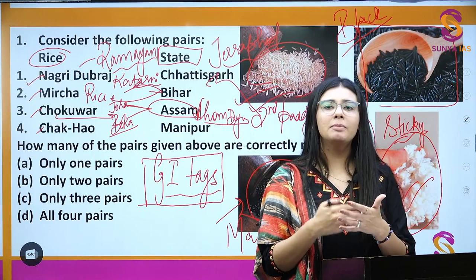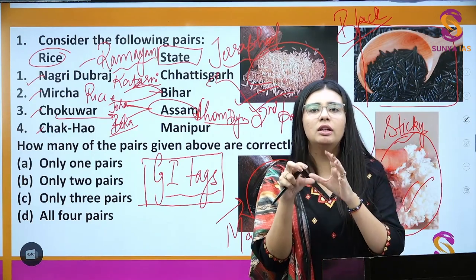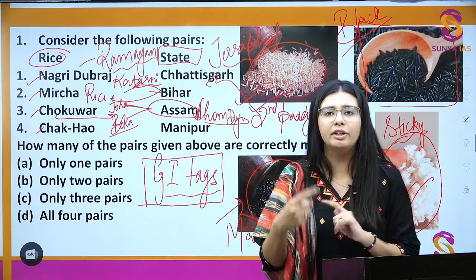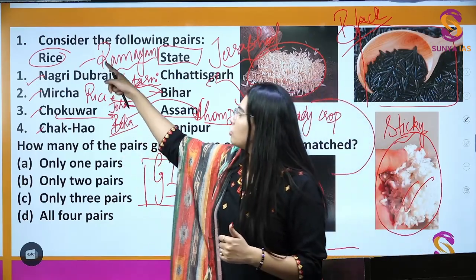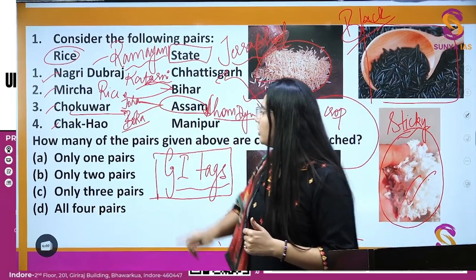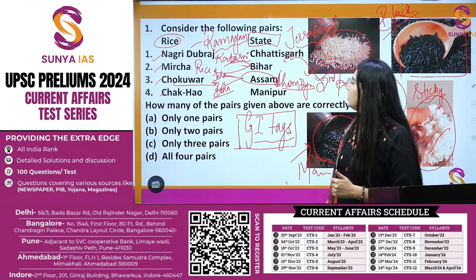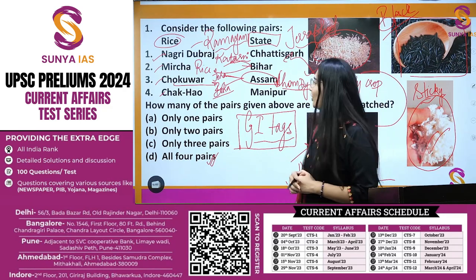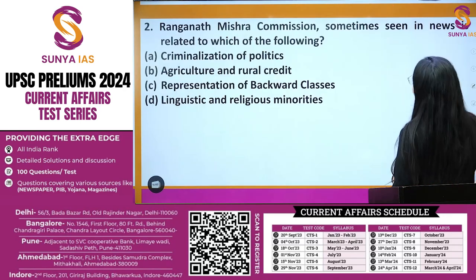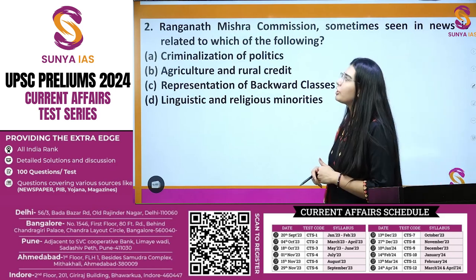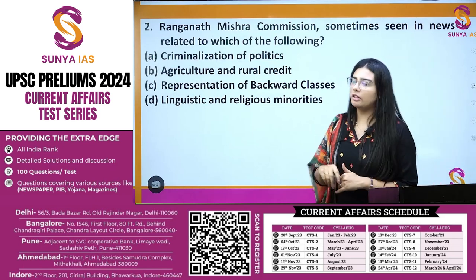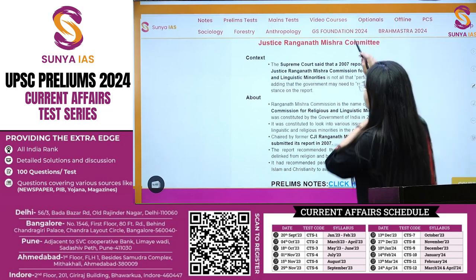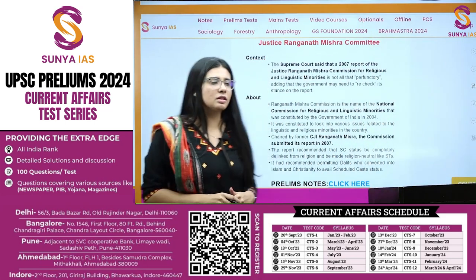We have now covered the major rice varieties with GI tags pertaining to different states. The question asks to correctly match all four pairs, so your answer will be all four pairs correct. Next question is on the Ragnath Mishra Commission — from our Sunya IAS prelims notes available on our website under prelim notes and current affairs.